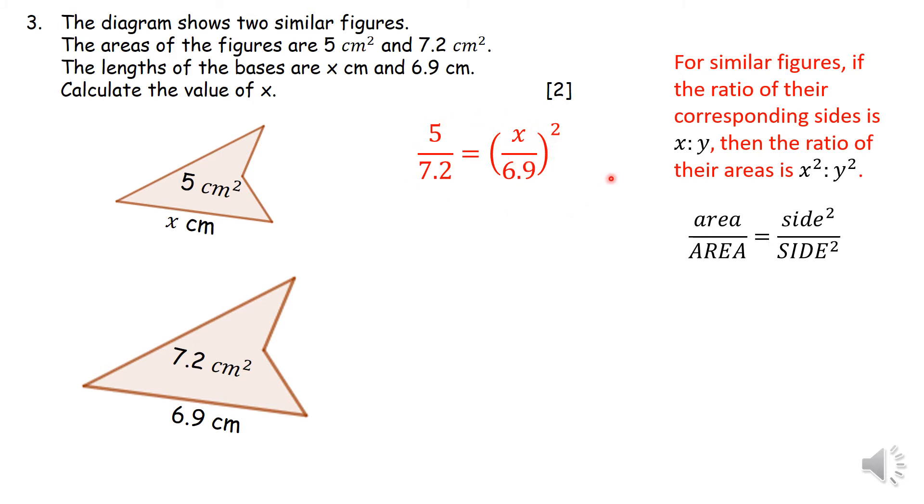So from here, it becomes a simple mathematical problem. In order for you to get rid of that square, you take the root of 5 divided by 7.2, and that answer you then multiply by 6.9 in order for you to find the value of x, which in this case is 5.75 centimeters.